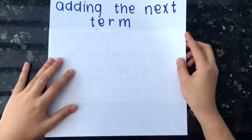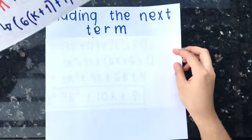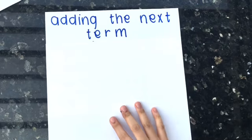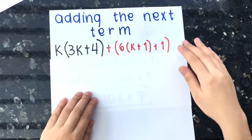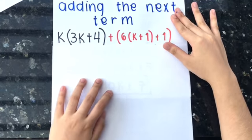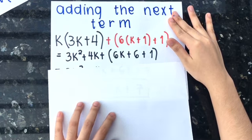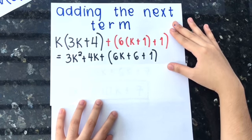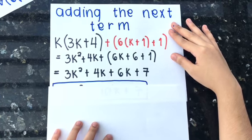Adding the next term: We've got the next term from our induction hypothesis. After that, we will do the distributive property that will result to this one. We have to combine all the like terms to get the final answer.